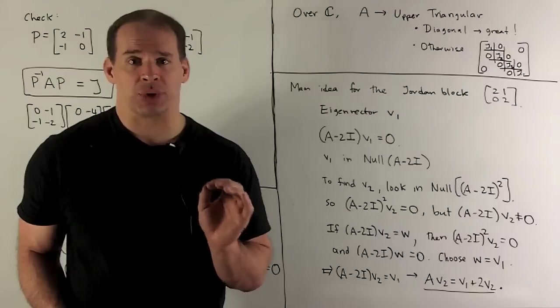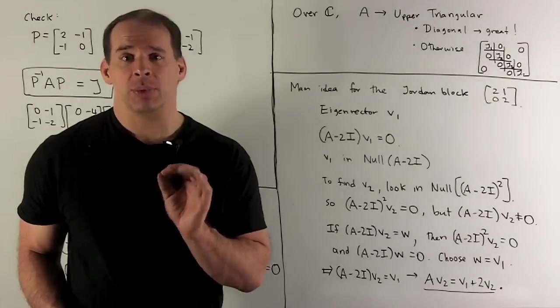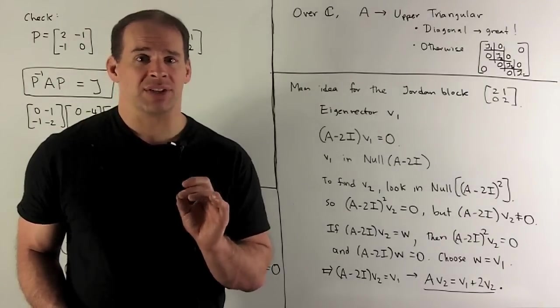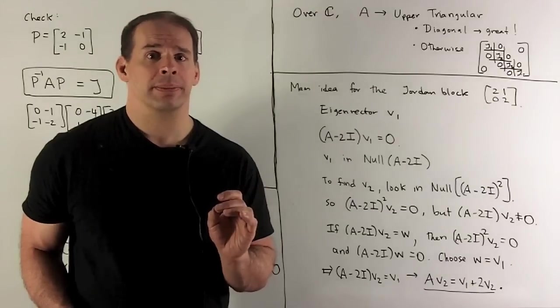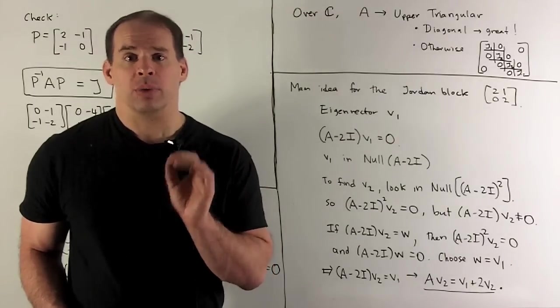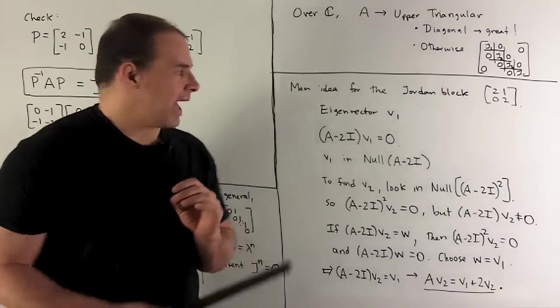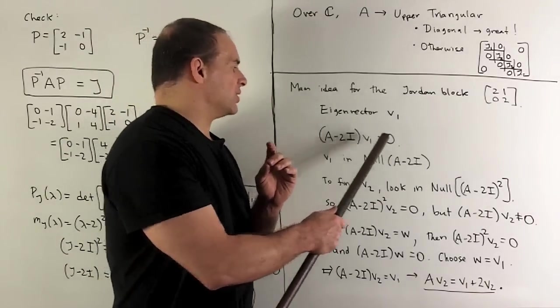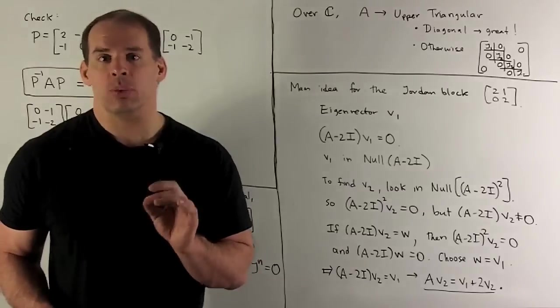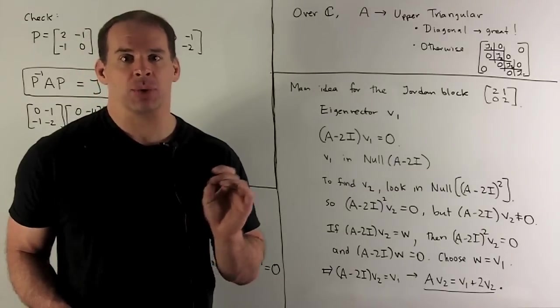Now, let's go back to our special case. So, where did we get the V2 for the basis that puts us in Jordan form? How did we get V1? Well, V1 was an eigenvector, so that means (A - 2I)V1 = 0. Or, V1 is in the null space of A - 2I.